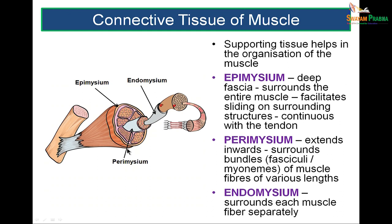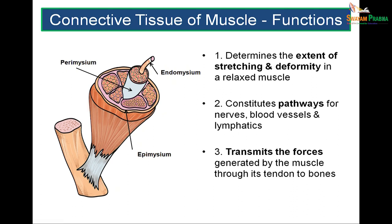What is the connective tissue supporting muscle? There is an outer covering called the epimysium, which covers the entire muscle and is tough and collagenous. Then each fascicle is covered by a perimysium, and each fiber is covered by a very delicate endomysium. The functions of this connective tissue are: first, to prevent excessive stretching of the muscle, especially in the relaxed state; second, to constitute pathways for nerves, blood vessels, and lymphatics; and third, most importantly, to transmit the forces generated by the muscle through its tendon to bones.